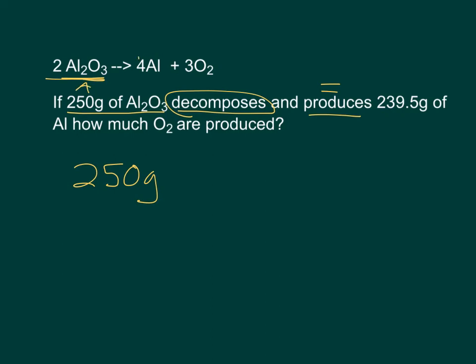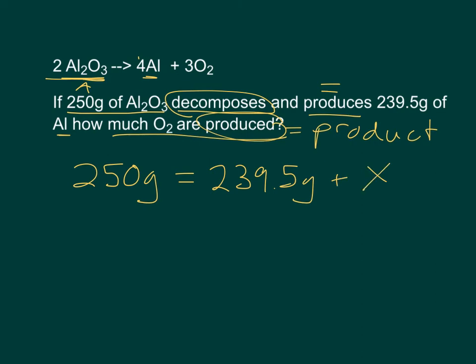250 grams, I've got my produces, so that I know it's going to be followed by an equal sign. And it produces 239.5 grams of Al, so 239.5 grams of Al, how much O2 are also produced. Again, that word produced implies that it is a product, and the amount that it's producing is unknown to me.